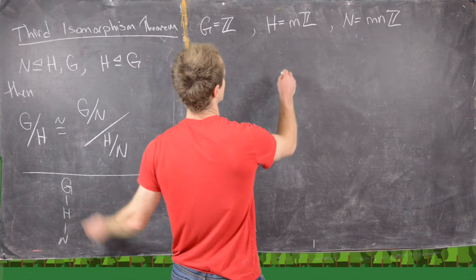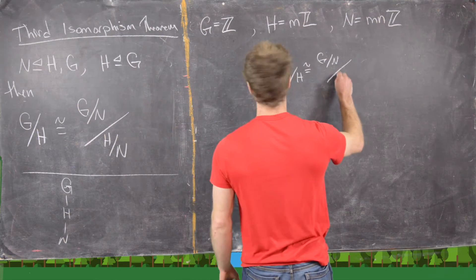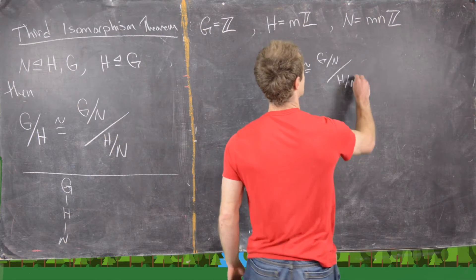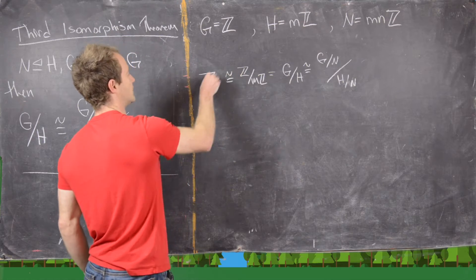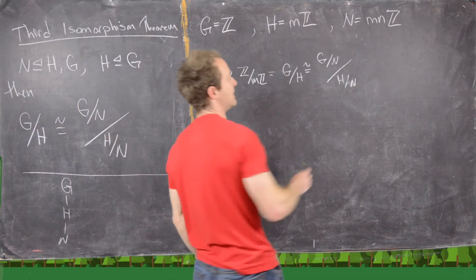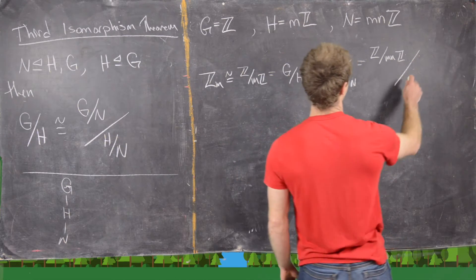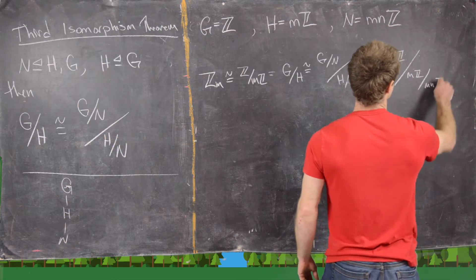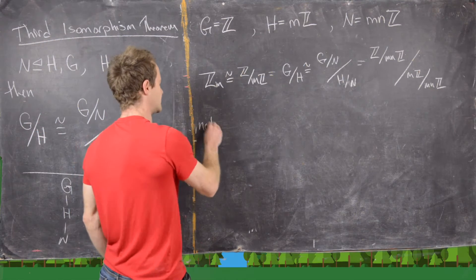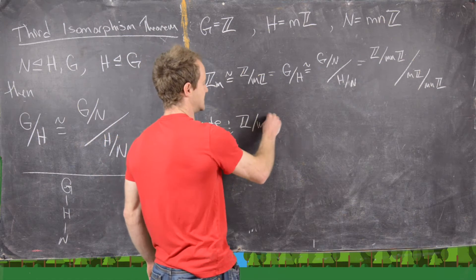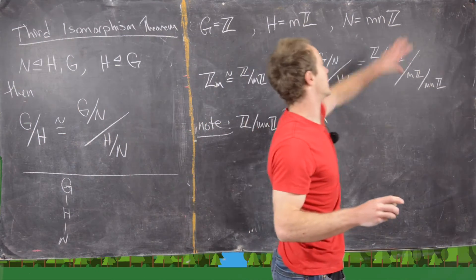Now applying the third isomorphism theorem, G mod H has got to be isomorphic to (G mod N) mod (H mod N). Expanding out the left-hand side, this is Z mod mZ, which in a previous video we proved is isomorphic to Z_M. And over here, this is going to be Z mod MNZ, mod out by MZ mod MNZ. So now let's try to get a handle on that right-hand side. The first thing we'll notice is that Z mod MNZ is isomorphic to Z_MN — that takes care of the numerator of this right-hand side.